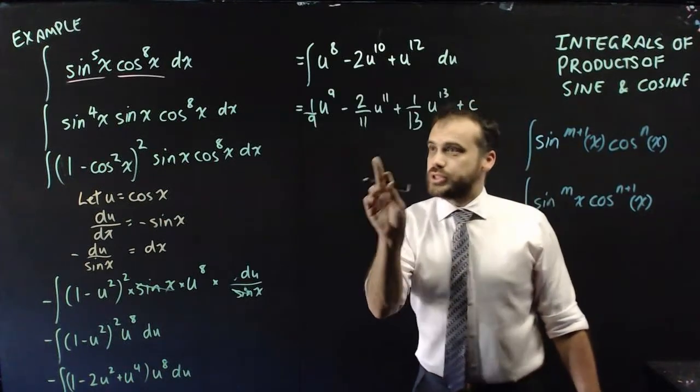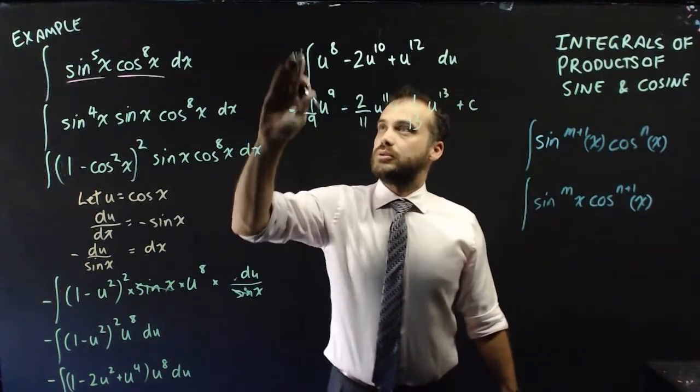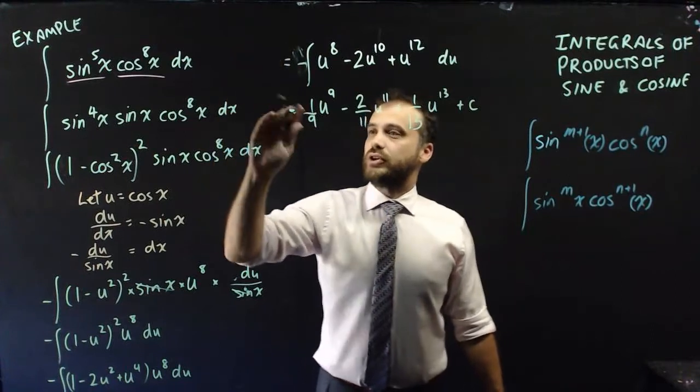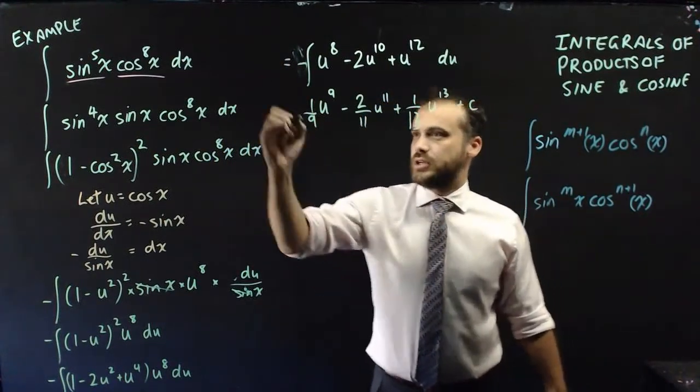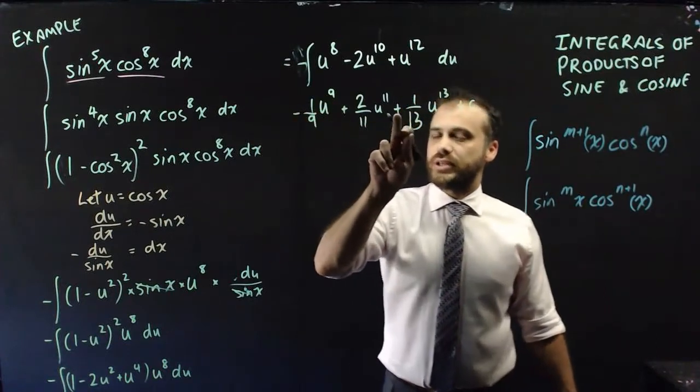And now that I've got something like that, oh, just need to be a bit careful. There was a negative 1 out there that I've forgotten. So I need to make sure that I multiply through by negatives. So that's going to be negative, that's going to be positive, and that's going to be negative.